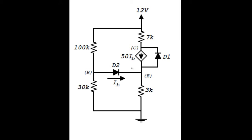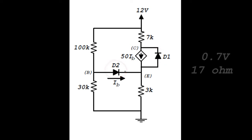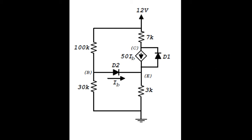In the circuit below this one, with two real diodes D1 and D2, specified by the 0.7 volt and 17 ohm forward dynamic resistance, three nodes on the reference have been identified: B, C, and E. And this is the reference node, the so-called ground.